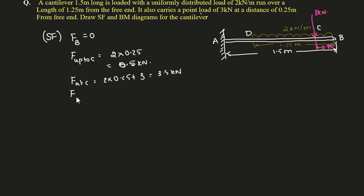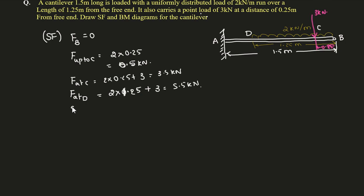Shear force at D: we have the UDL spread over 1.25 meter and the point load. UDL load = 2 × 1.25 = 2.5 kN, plus the point load of 3 kN, giving 5.5 kN. There is no load between D and A, so the same shear force of 5.5 kN continues up to A. Shear force is the sum of forces to the right or left of the section.